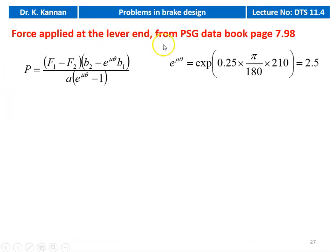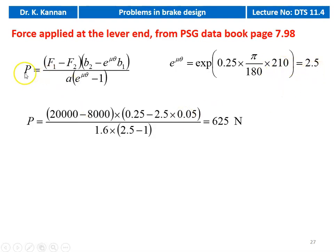For the force at the end of the lever, from the PSG data book page number 7.98, the equation is: P equals (F1 minus F2) into (B2 minus e to the power mu theta into B1) divided by A into (e to the power mu theta minus 1). Substituting: e to the power mu theta equals 2.5, P equals (20,000 minus 8,000) into (0.25 minus 2.5 into 0.05) divided by 1.6 into (2.5 minus 1) equal to 625 Newton. This is the force to be applied at the end of the lever to apply the brake. This is the answer to the problem.